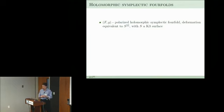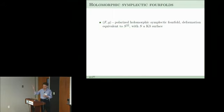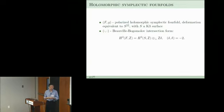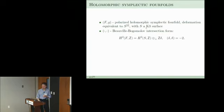Now I want to talk about holomorphic symplectic fourfolds. The main example is the Hilbert scheme of two points on a K3, Hilb^2(S), where you resolve the singularity along the diagonal to get a holomorphic symplectic variety. The beautiful thing about these varieties is that you can not only intersect divisors with curves but also divisors with divisors and curves with curves: there is a quadratic form on H2, the Beauville-Bogomolov intersection form.